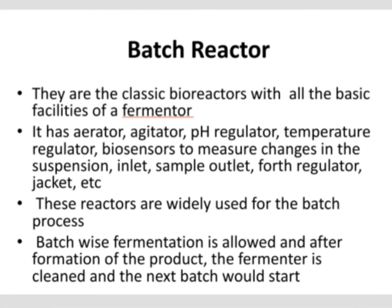The last one is the batch reactor. It is the classic bioreactor with all the basic facilities of a fermenter — the most commonly used industrial fermenter. It has an aerator, agitator, pH control, temperature control, bio-sensors to measure variations, inlets for sample and nutrient input, sample outlets, and cooling as well as heating jackets. These reactors are widely used for batch process fermentation. After completion of one batch, the product is extracted, the fermenter is cleaned, and the next batch starts again.